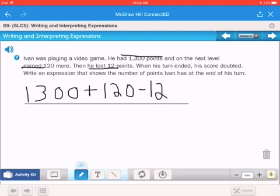When his turn ended, his score doubled. So think about what doubled means. So what doubling means is you take something times 2. Since we're adding and subtracting, we want to make sure we put parentheses in front and behind what we've done so far, and then just take that times 2, times 2, okay?